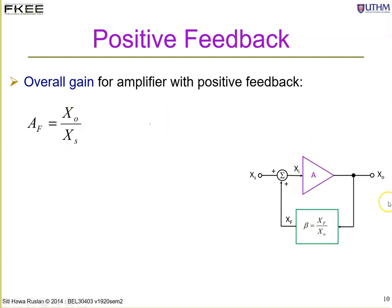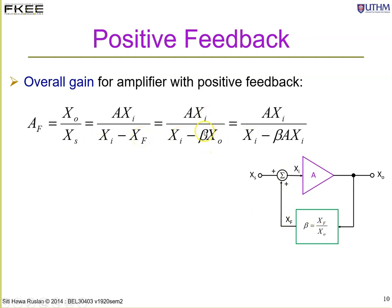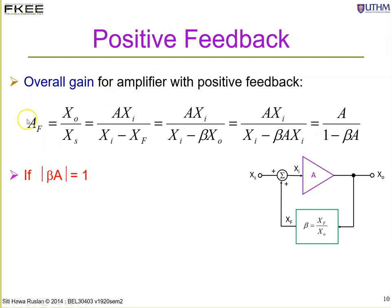To find the overall gain, substitute x_o with A·x_i since the amplifier output is A times its input. Using the relation x_s equals x_i minus x_f and x_f equals beta·x_o, after substitution and dividing through by x_i, the overall gain for positive feedback is A_f equals A divided by (1 minus beta·A).